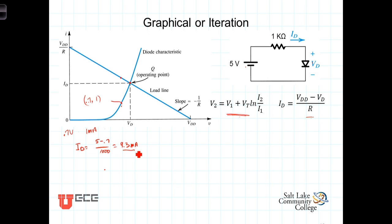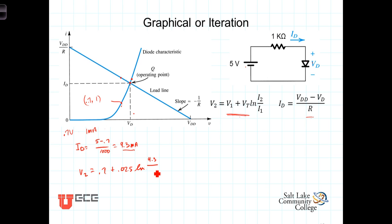Now we use this 4.3 mA current along with the old voltage of 0.7 V and the old current of 1 mA to project a new point on the diode equation curve corresponding to 4.3 mA. The new voltage V₂ equals the old voltage 0.7 plus 0.025 times the natural log of (4.3 mA / 1 mA). When we calculate that, we get a new voltage of 0.738 volts — the diode voltage corresponding to a 4.3 mA current.